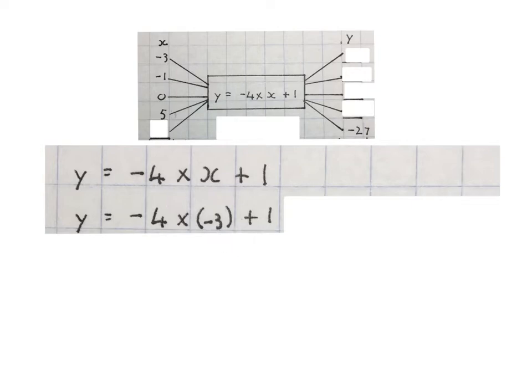Now we do order of operations. First we're going to times and then plus. Minus four times minus three is plus twelve. Plus twelve plus that one is then thirteen. So Y is thirteen when X is minus three. I filled the thirteen in here.